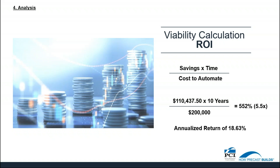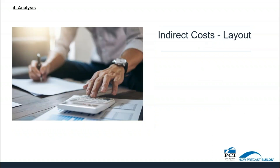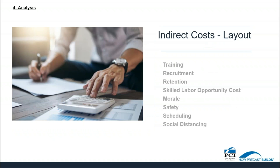When preparing the viability calculations of payback and ROI using the CLR methodology, only the hard direct costs are used. However, there remain indirect costs that we can also eliminate or reduce, like training, recruitment, retention, skilled labor opportunity cost, the cost of morale, safety, scheduling, and now the case of social distancing. For example, a layout position requires more training, it can be hard to recruit for, and it can be a reason for high turnover — linking these indirect costs to layout. Though some of these items are harder to quantify, these hidden costs can also be considered when calculating payback and ROI.